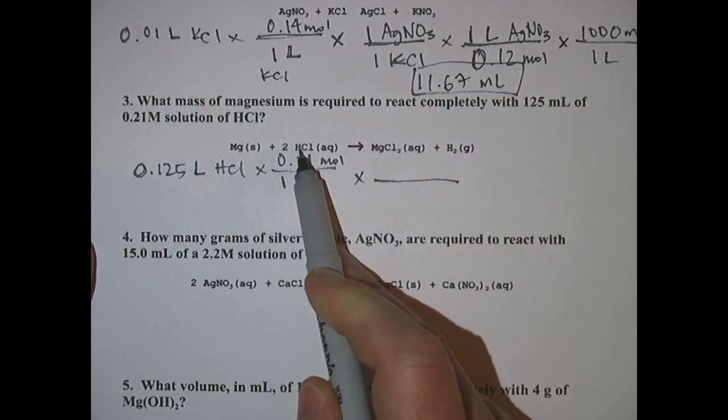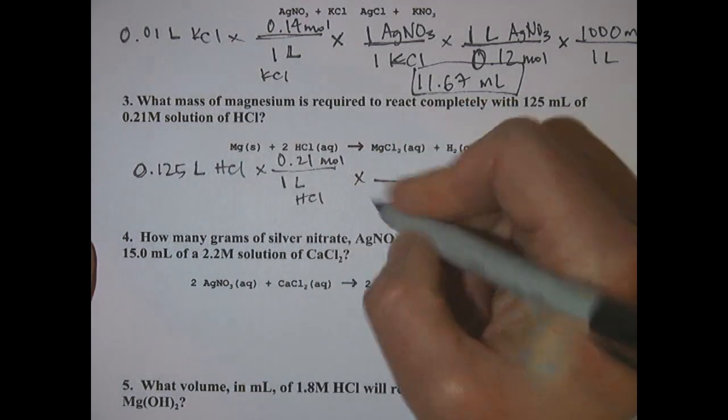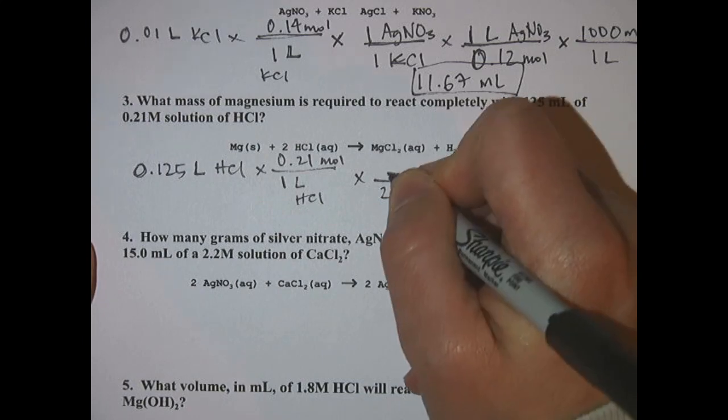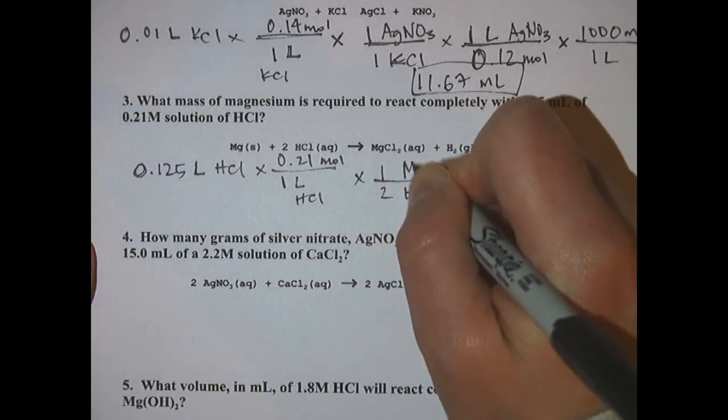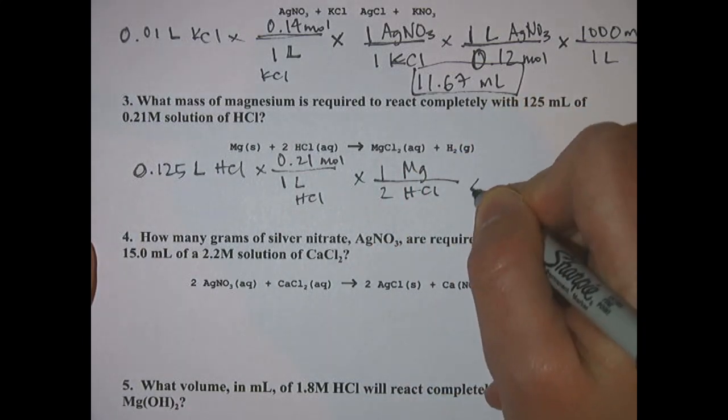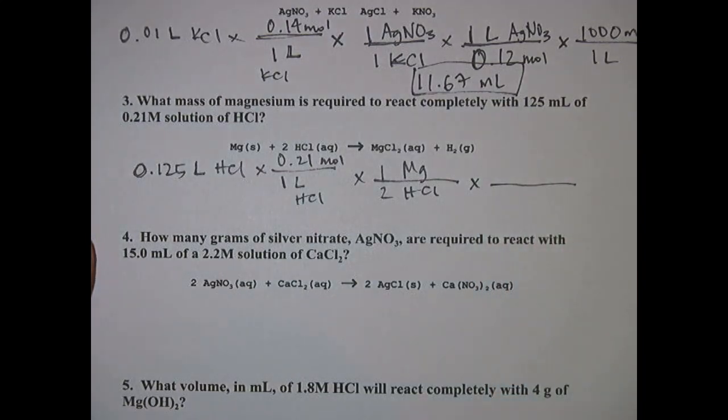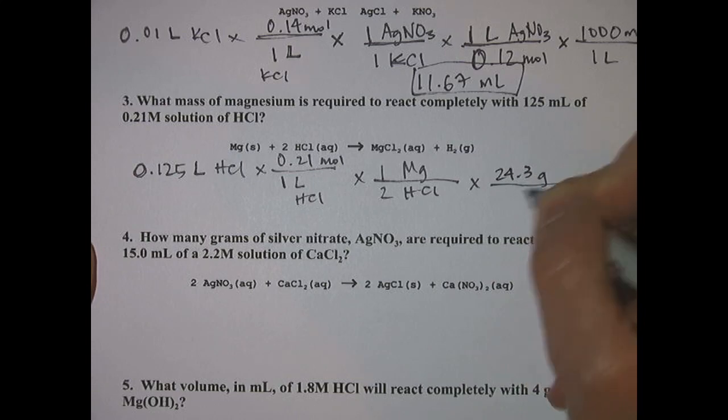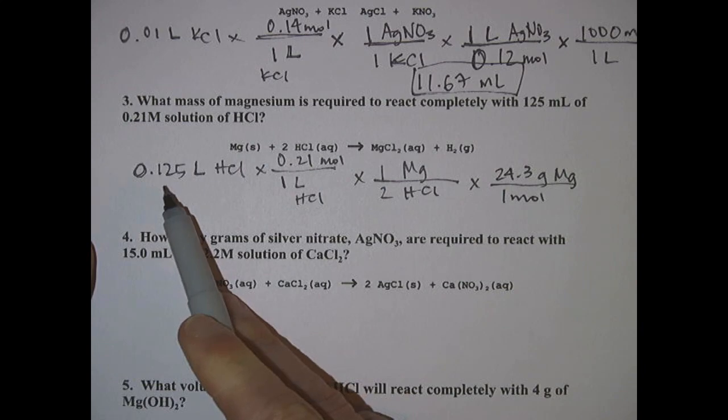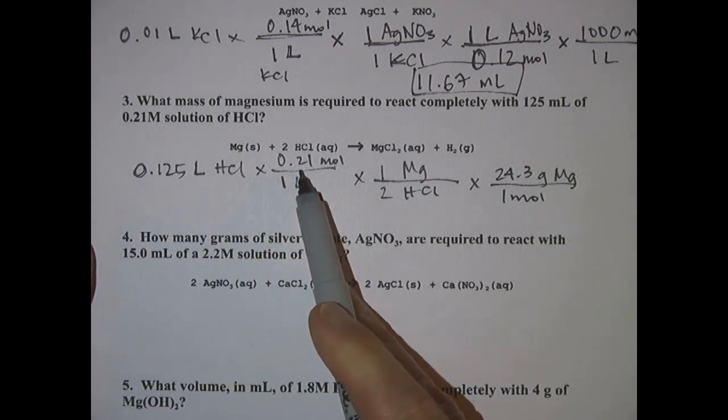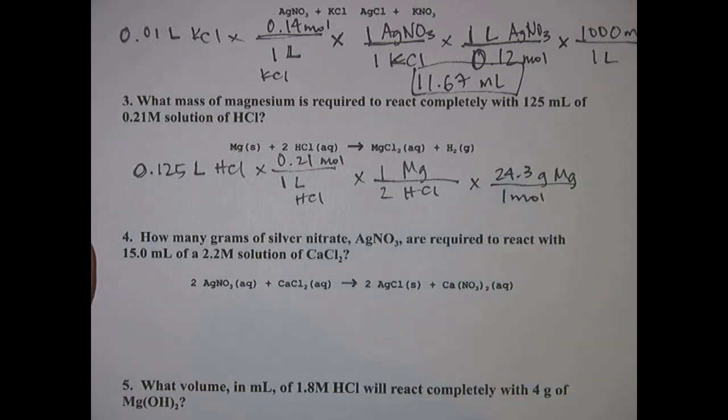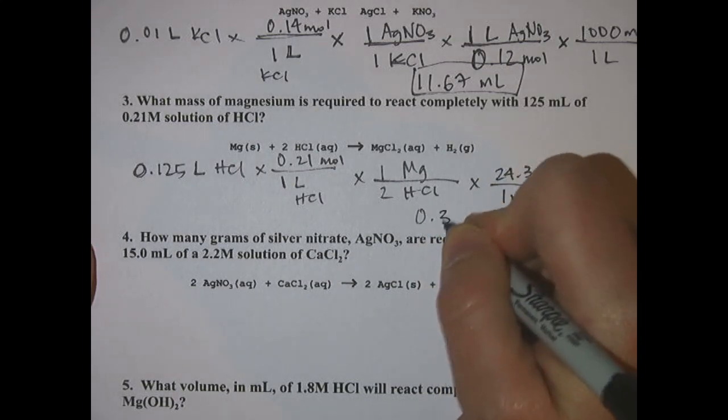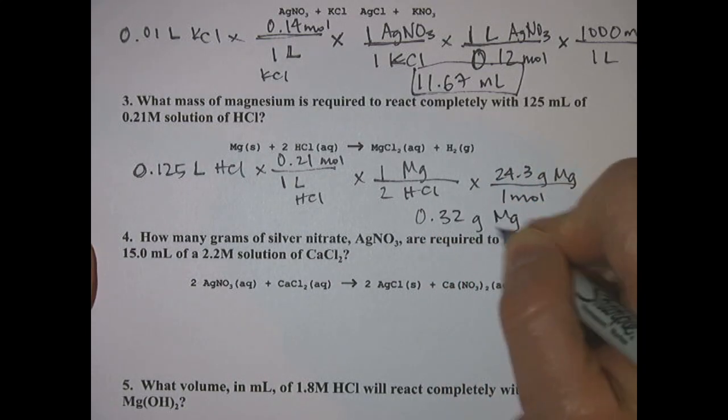You want to go from HCl to magnesium, that's the Mg, so it's a two to one ratio. Two HCl's will react with one magnesium. You want your answer in grams again so you use the molar mass of magnesium which is 24.3 grams per mole. So then this problem, 0.125 times 0.21 divided by 2 times 24.3, I ended up with 0.32 grams of magnesium.